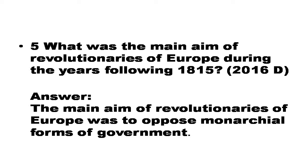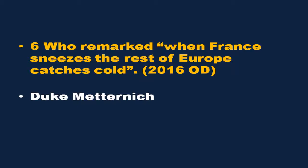Question number 5: What was the main aim of revolutionaries of Europe during the years following 1815? The main aim of revolutionaries of Europe was to oppose the monarchical form of government. Question number 6: Who remarked 'When France sneezes, the rest of Europe catches cold'? The answer is Duke Metternich.